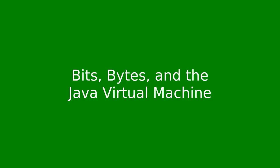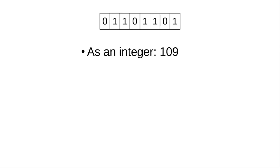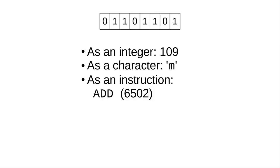Let's talk a little more about bits and bytes. As the book tells you, a byte is 8 bits, or binary digits. If we interpret it as an integer, it's the number 109. If we interpret it as an encoded character, it's the lowercase letter M. If we interpret those bits as a programming instruction on a 6502 processor, it's the instruction to add two numbers.